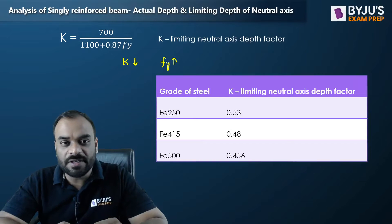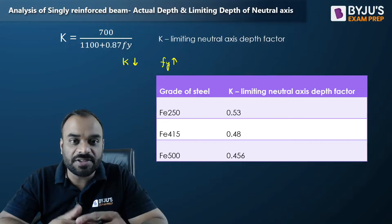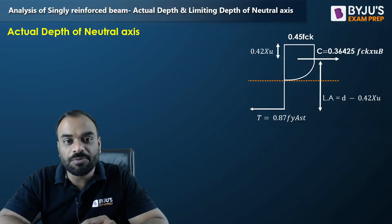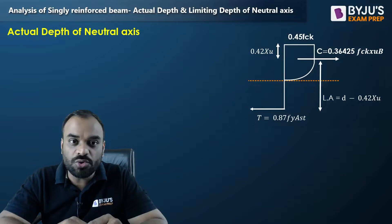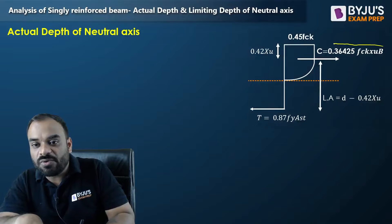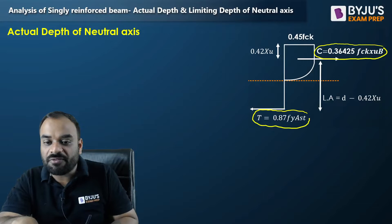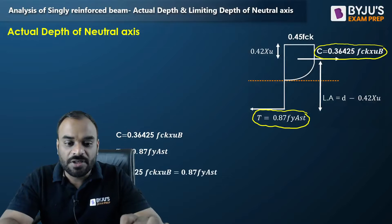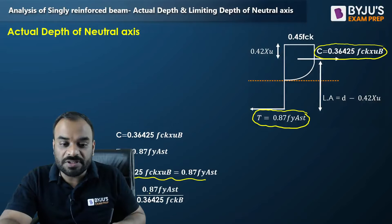After finding the limiting depth of neutral axis, we also need to find the actual depth of neutral axis, so we can determine whether the section is under-reinforced, over-reinforced, or a limiting section. To find the actual depth, we equate the compressive and tensile forces using the stress diagram. The compressive force C equals 0.36425 × FCK × XU × B, and the tensile force T equals 0.87FY × AST. Setting C equal to T gives XU equals 0.87FY × AST divided by (0.36425 × FCK × B).